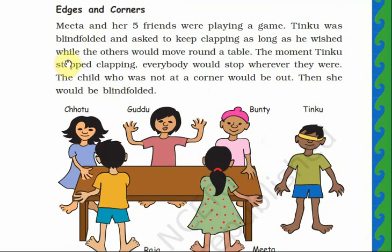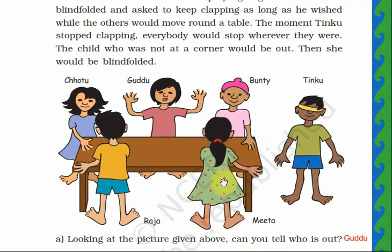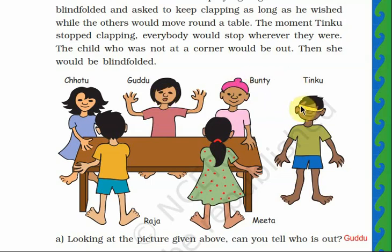So here Meeta and her five friends were playing a game. You can see Meeta and her five friends — one, two, three, four, five friends. Their names are Raja, Chotu, Guddu, Bandi, and Tingu. So they were playing a game.